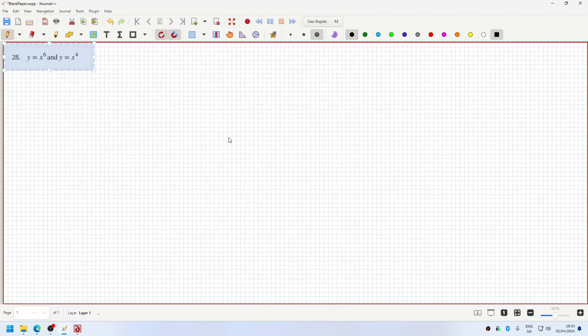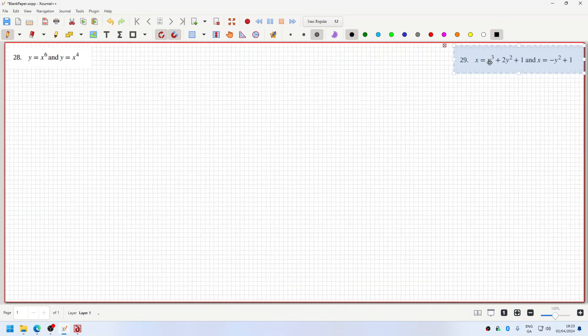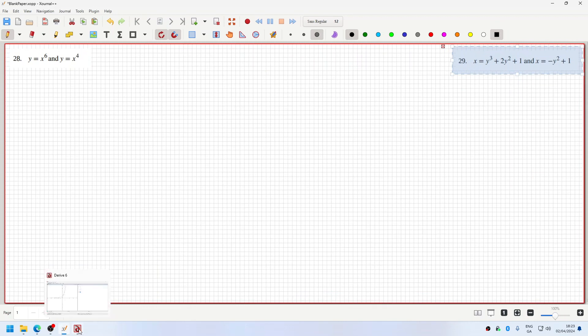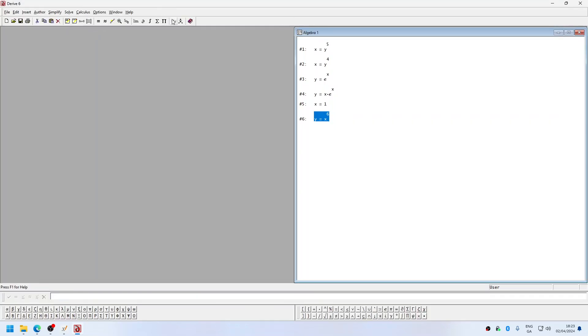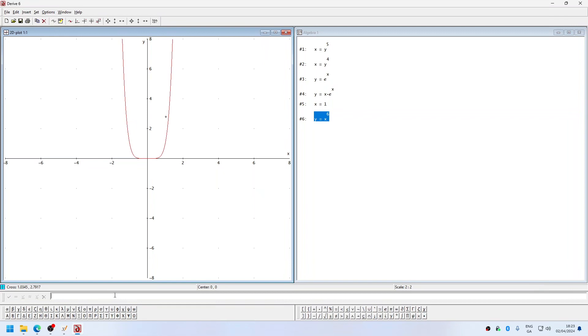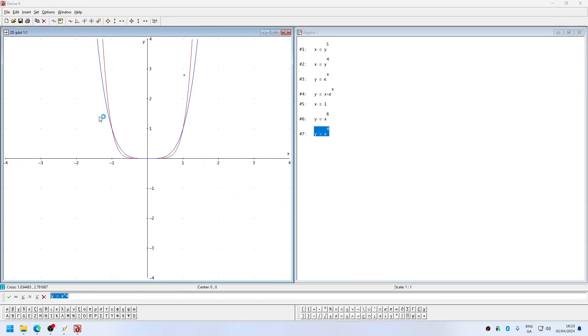Problem 29, and then it's y equals x power 6, then power 4. So that's, we've got 2 here.